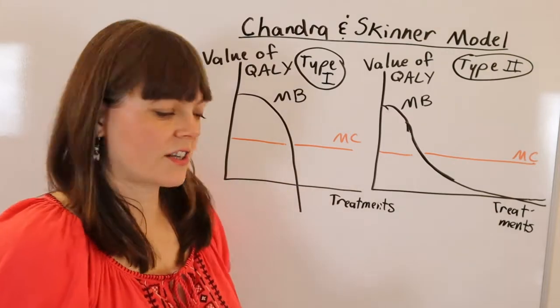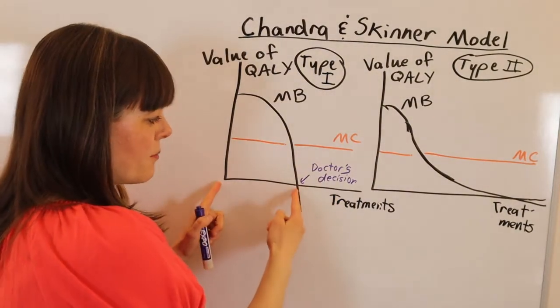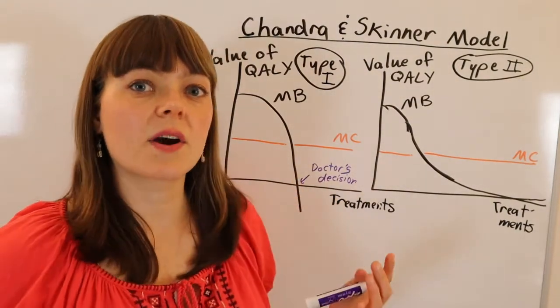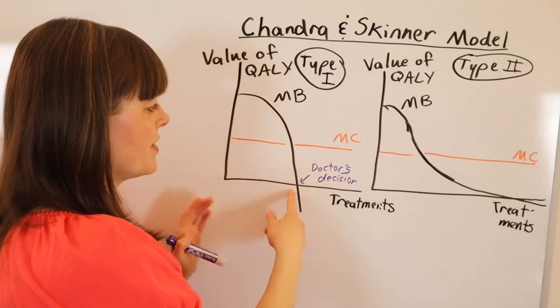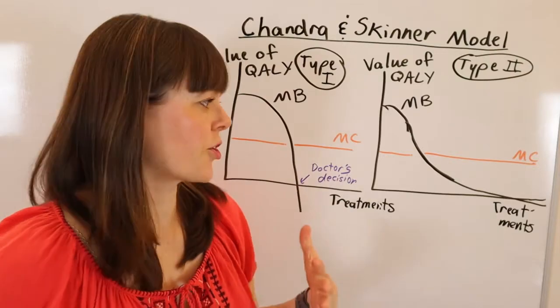is to provide the surgery or the treatment to this number of patients. The doctor's decision rule, the doctor's decision is to treat this number of patients because they treat anyone who has a benefit greater than zero. And for type 1 technologies, these two groups are pretty similar.